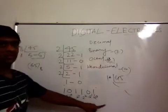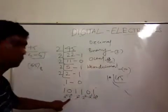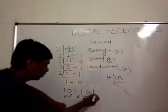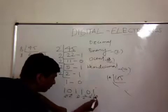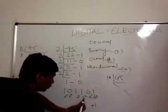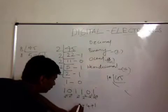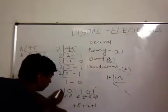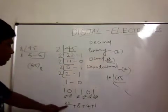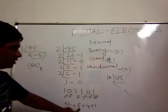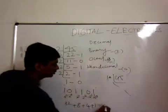The weights are 2^0, 2^1, 2^2, 2^3, 2^4, and 2^5. So: 1×2^0 = 1, 0×2^1 = 0 (skip), 1×2^2 = 4, 1×2^3 = 8, 0×2^4 = 0 (skip), 1×2^5 = 32. Adding these: 32 + 8 + 4 + 1 = 45.